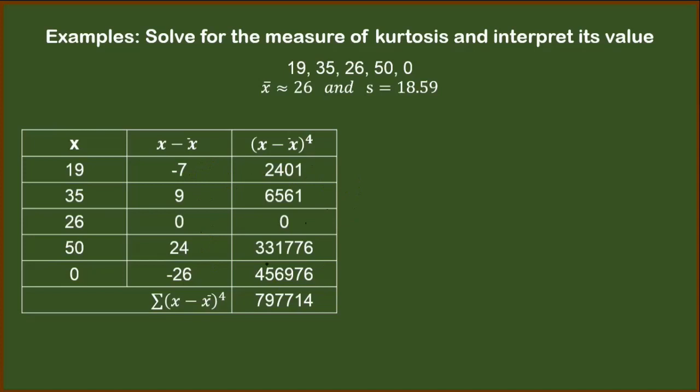For the third column, we should have these entries. And then recall that our formula for kurtosis is this. So we will substitute 797,714 divided by 5 because we have here 5 data. We will include zero when counting how many data are involved in the data set. So we have 5.